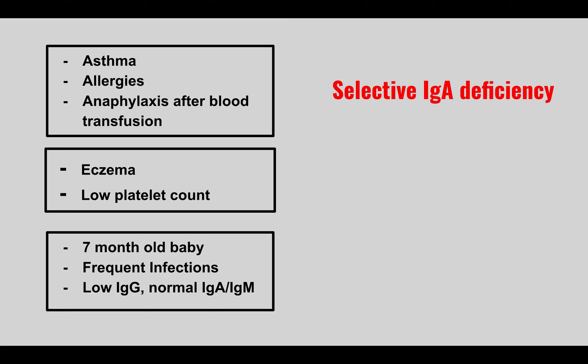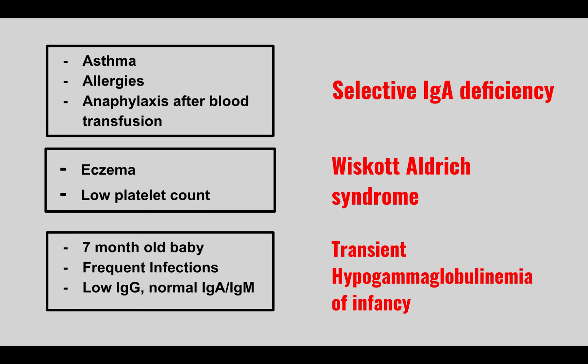A young boy presenting with eczema and a low platelet count has Wiskott-Aldrich syndrome. A seven-month-old baby with frequent infections, low IgG, but normal IgA and IgM has transient hypogammaglobulinemia of infancy.